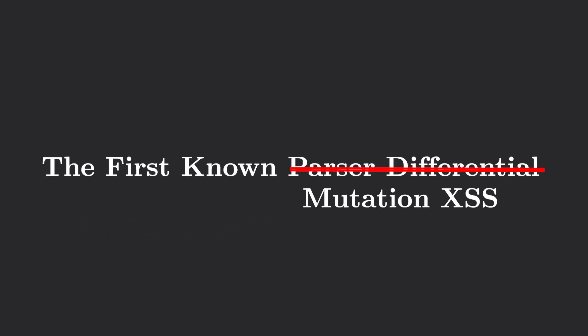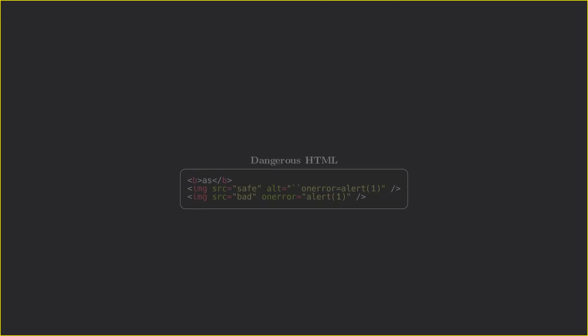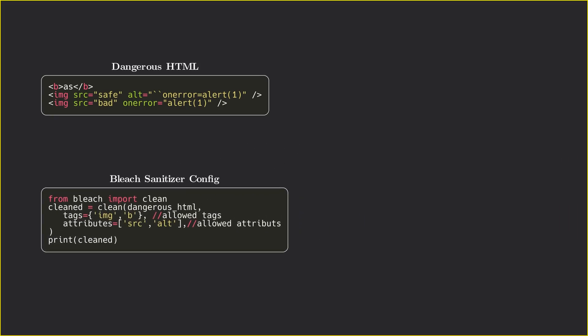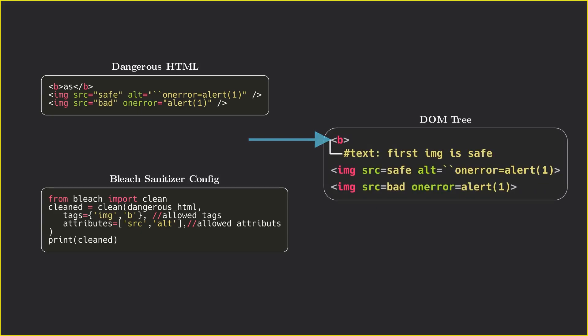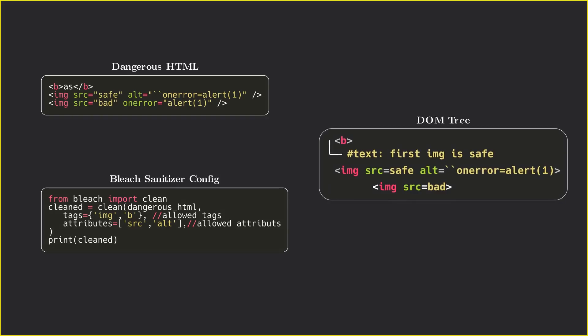Let's look at the first known HTML parsing differential that led to mutation XSS, first discovered in 2007 by Yosuke Hasegawa in Internet Explorer. Here is the HTML string from a malicious user being sanitized by Python module Bleach, the server-side sanitizer from Mozilla. The sanitizer parses the HTML and creates a DOM tree, then iterates through it. It encounters a B tag — safe, so it moves on. It finds an image tag with source and alt attributes. The onError here, while it looks like an attribute, is actually inside the alt attribute value within quotes, so it's not considered dangerous. The sanitizer moves on, then finds another image tag with a direct onError event listener and removes it.